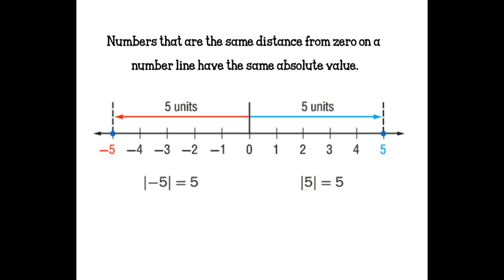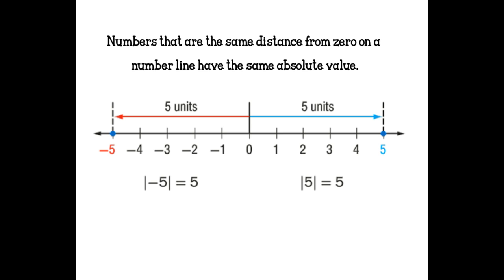Numbers that are the same distance from 0 on a number line have the same absolute value. Absolute value means how far away from 0 a number is. The absolute value notation uses straight vertical lines on either side of a number. Every time you see those lines, ask yourself: how far from 0?